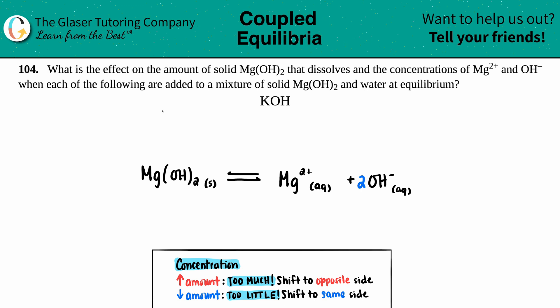Number 104. What is the effect on the amount of solid Mg(OH)2 that dissolves and the concentrations of Mg2+ and OH- when each of the following are added to a mixture of solid Mg(OH)2 and water at equilibrium?